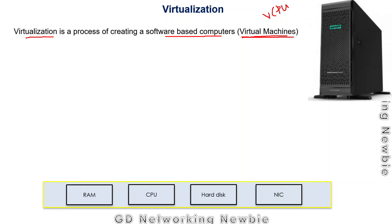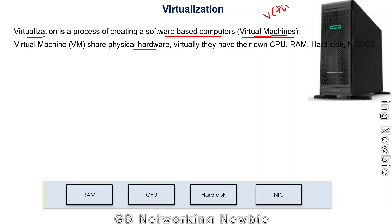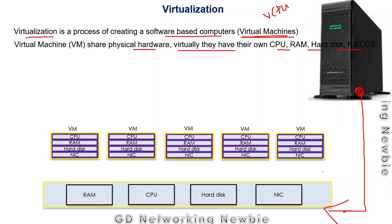Every virtual machine will have its own virtual CPU, RAM, hard disk, and network interface cards. For example, we have a physical computer with physical resources — NIC, hard disk, CPU, RAM — and with the help of virtualization we can create multiple virtual machines from those physical resources. Every virtual machine will have its own CPU, RAM, and hard disk, but in the end they all share the physical resources of the underlying physical computer.